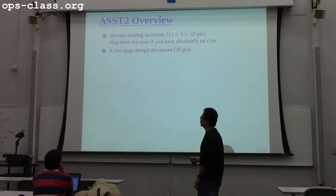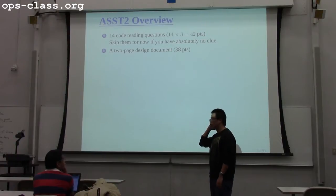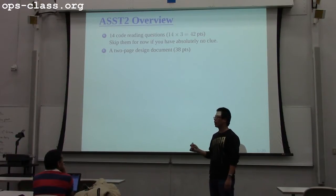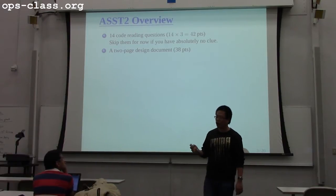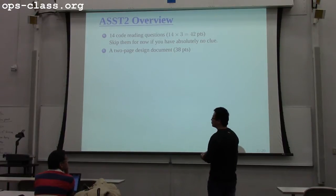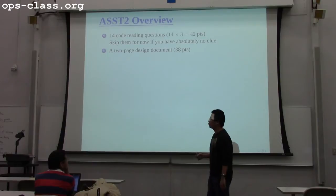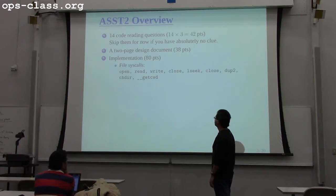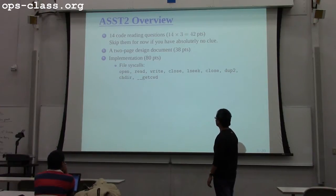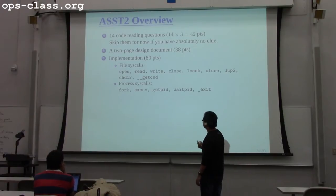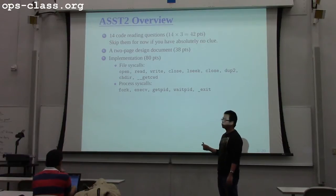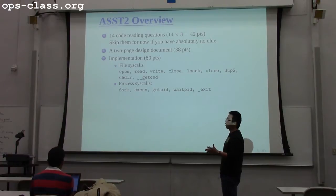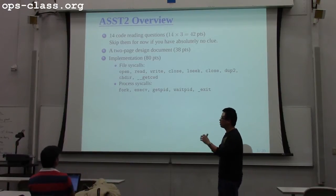You also have to submit a two-page design document. In this design document, you will describe in detail what your file table looks like, how your process structure looks like, how you allocate PIDs, how you allocate file descriptors, and what happens to your file table when you open, read, or write.